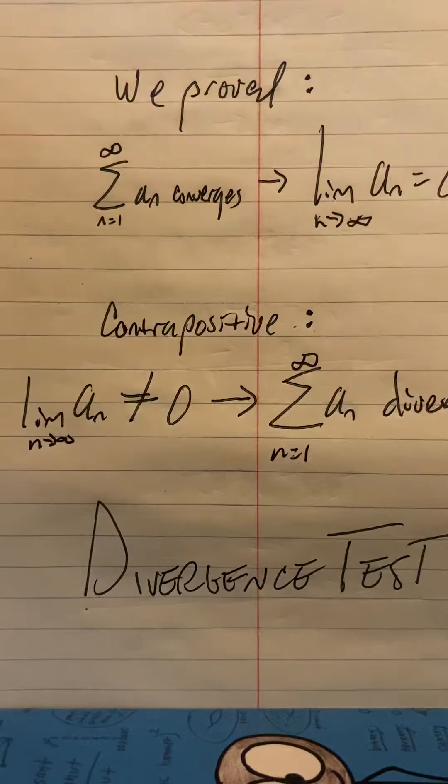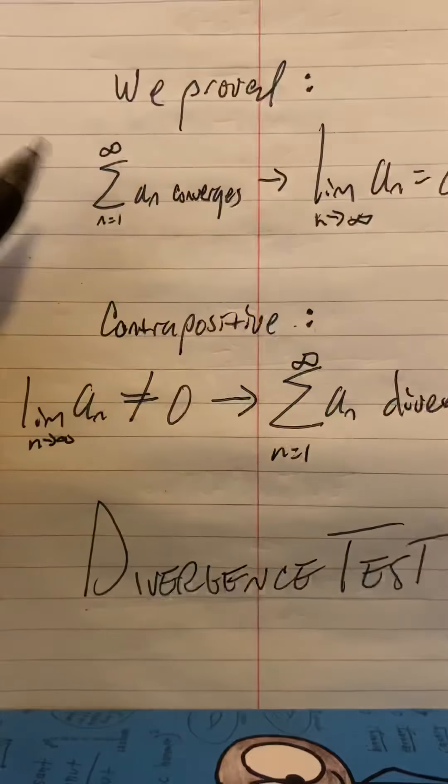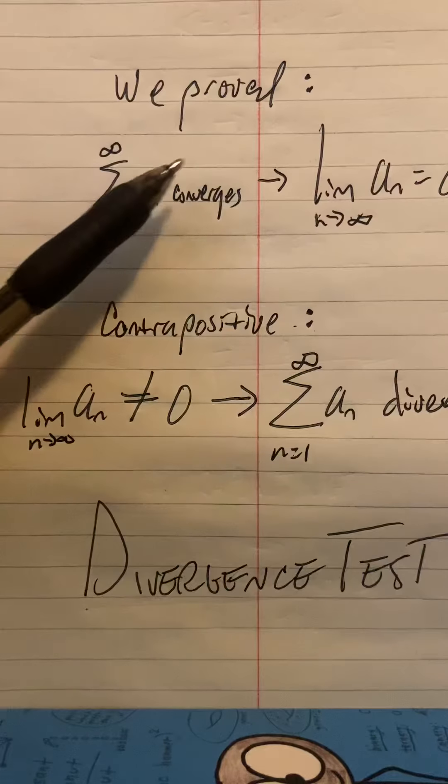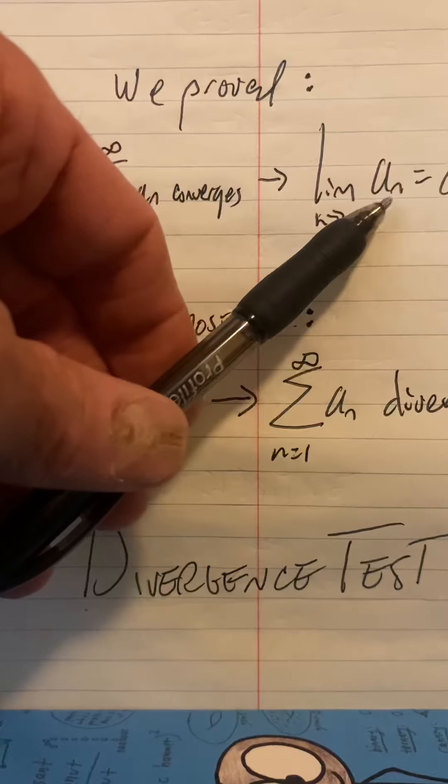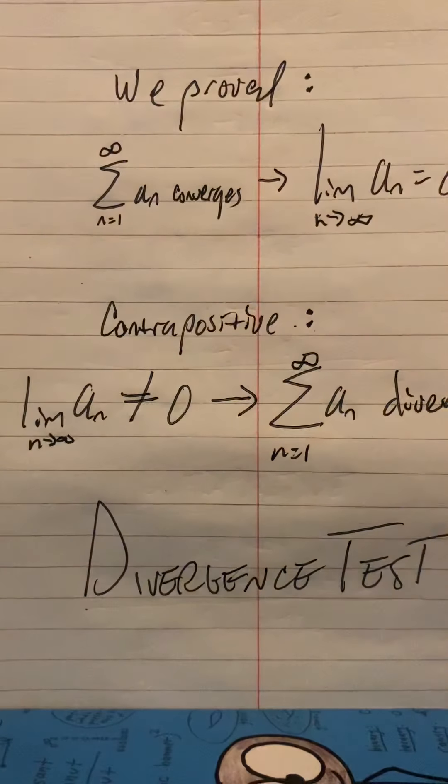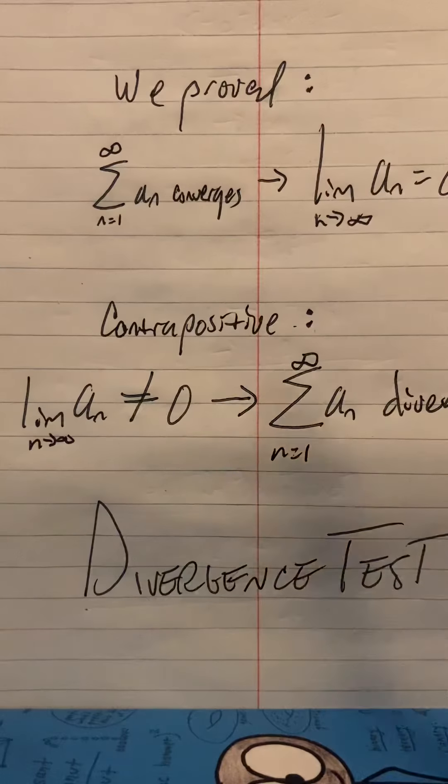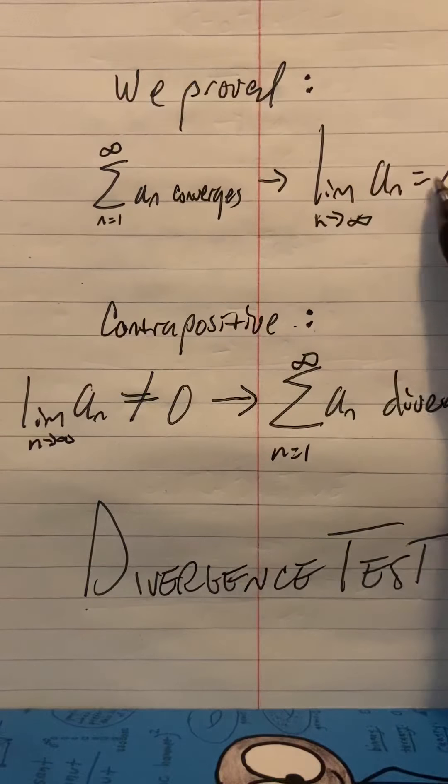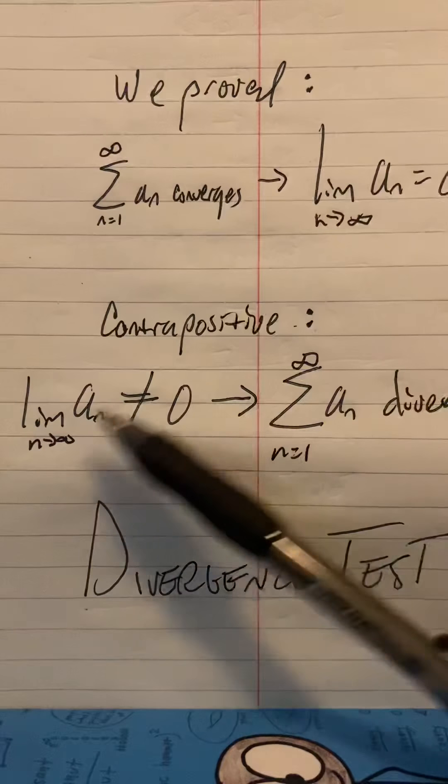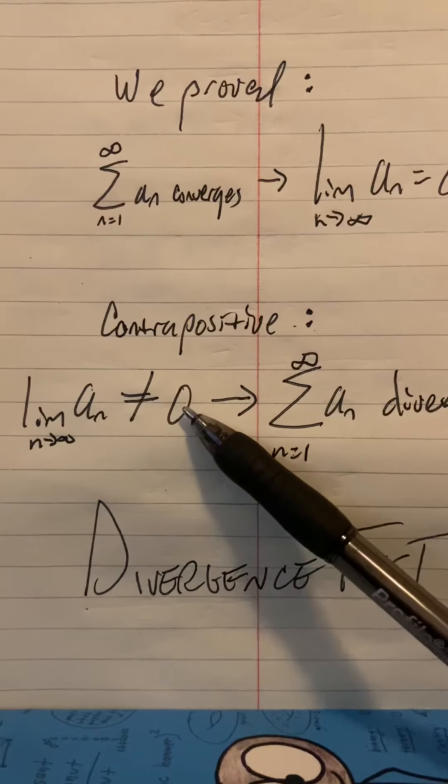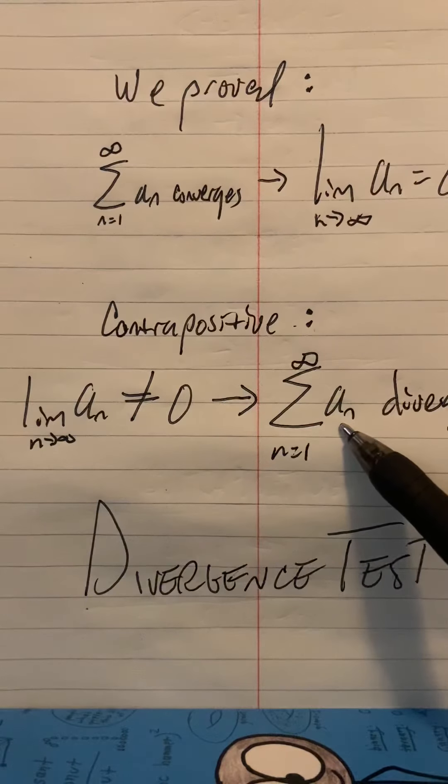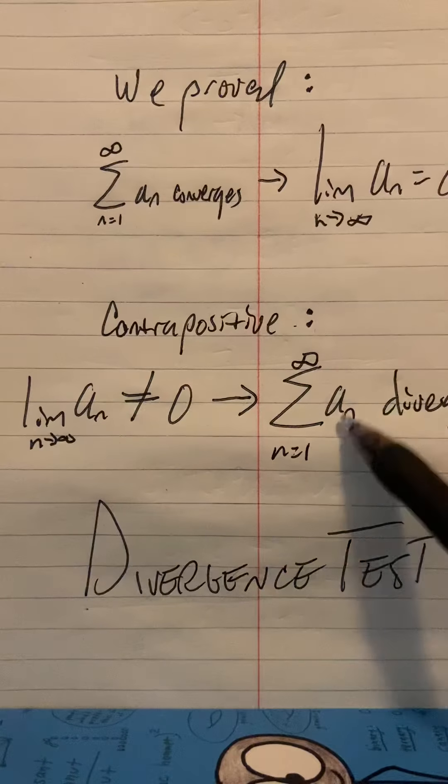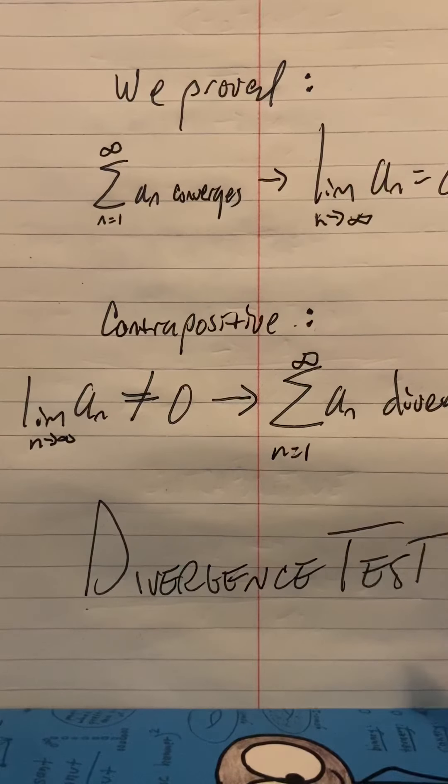We proved earlier that a series that converges means the limit of its argument, the sequence, is zero. So by contrapositive, if we negate it, if we say the limit is not zero, then we can conclude that this series does not converge, which means it diverges. And this is called the divergence test.